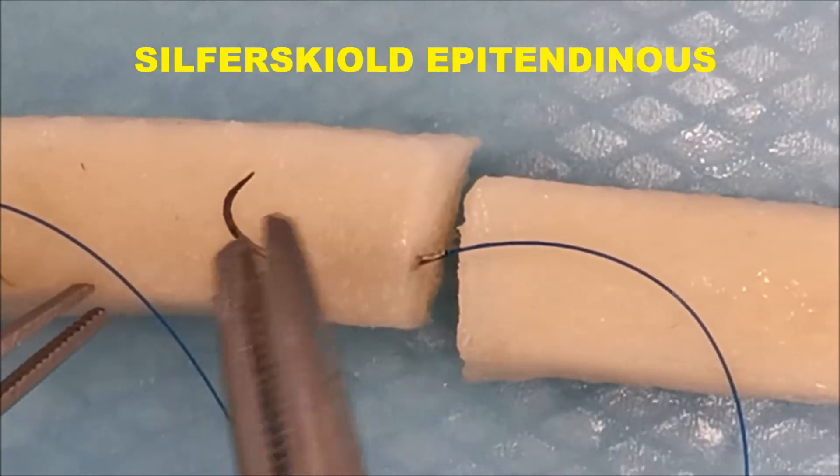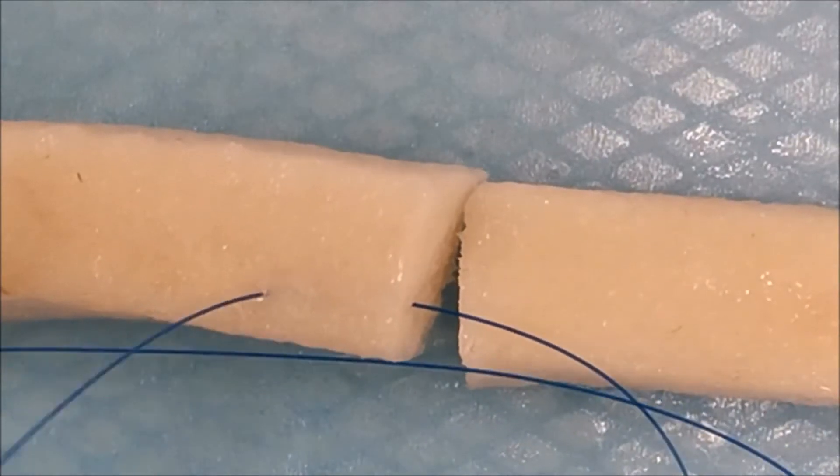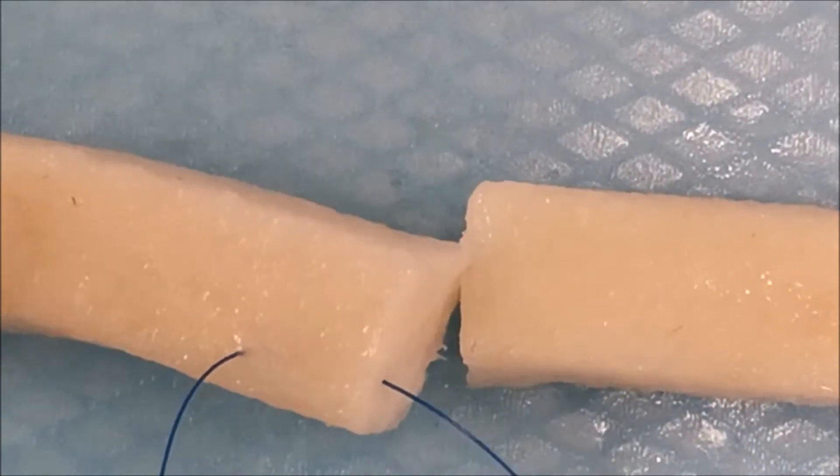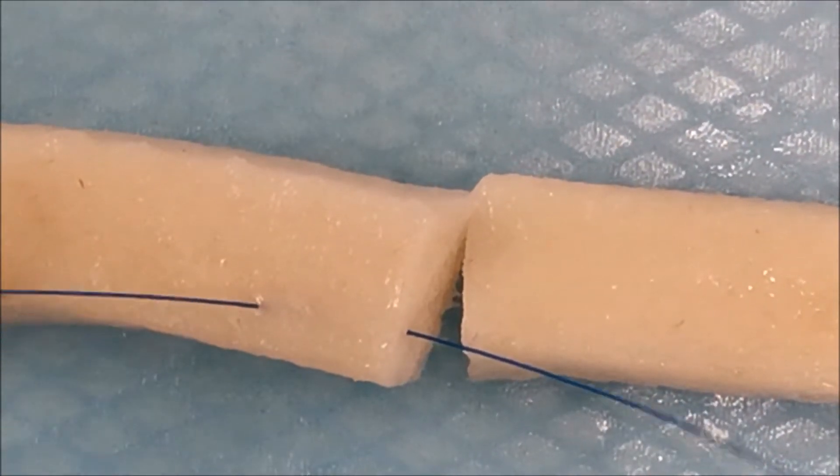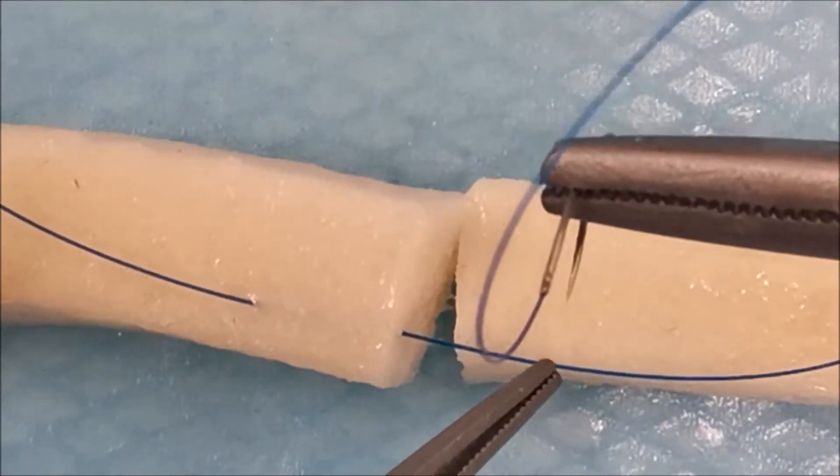For an epitendinous suture, the silver skull is one option. I like to bury my knot so I start from the inside of the tendon.